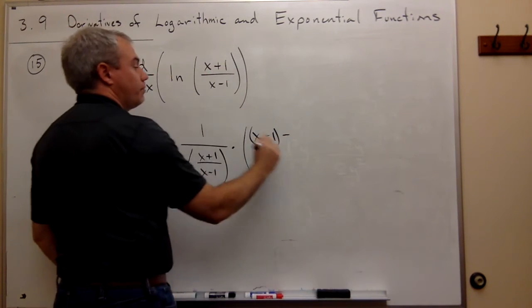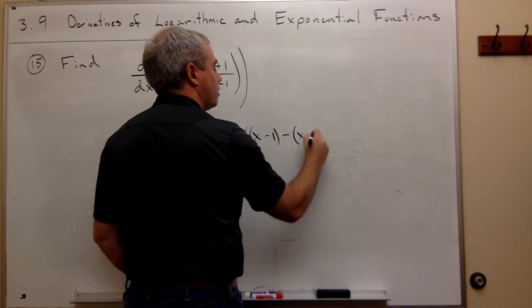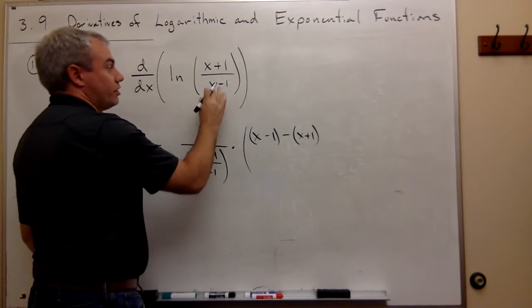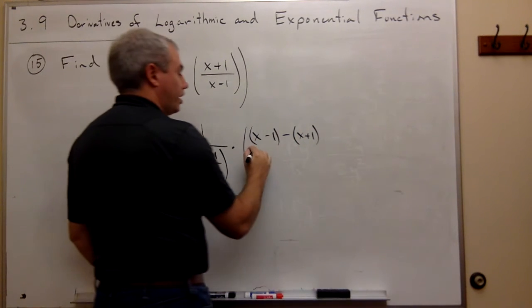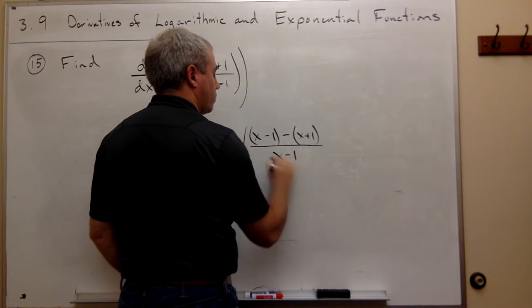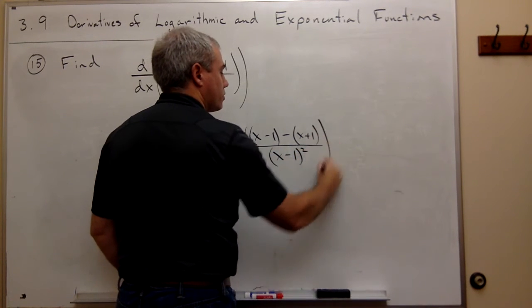minus the top, which is x+1, times the derivative of the bottom, which is 1, all over the bottom, (x-1), quantity squared.